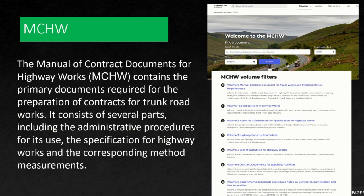Volume 1 is very important — it contains series starting from Series 0, Series 100, 200, 300, where each series relates to a specific document. Volume 4 covers bill of quantities and construction details, and Volume 5 covers contract documents for specialist activities. Each volume contains different types of documents.